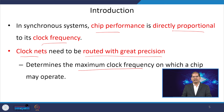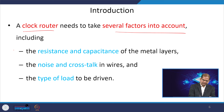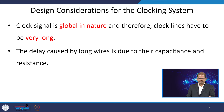The clock net determines the maximum frequency of the clock signal at which we can operate the chip. We have clock routers — algorithms used to route the clock signals — that need to take several factors into account: the resistance and capacitance of the metal layers, noise and crosstalk in the wires, and the type of load it is driving, i.e., how many flip-flops it is driving. Based on that, the router will insert buffers wherever necessary.